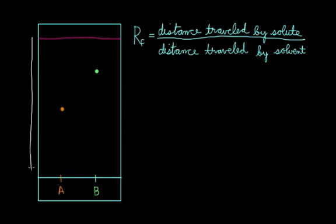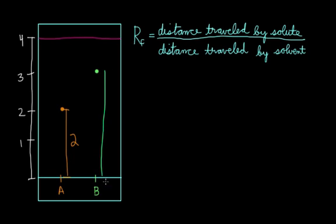So let's put a ruler next to our TLC plate, much like you would if you were sitting in lab. We'll say that this is one unit, two units, three units, and four units. So we can measure the distance that A has traveled, and that's from the starting line to the center of the spot, that's two units. And for compound B, again from the starting line to the center of the spot, that's three units. And for the solvent, from the starting line to this finished line, that is four units.